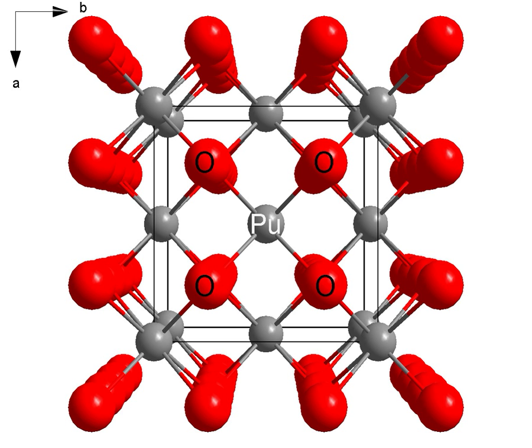Plutonium-238 dioxide is used as fuel for several deep space spacecraft such as the New Horizons Pluto probe as well as the Curiosity rover on Mars. The isotope decays by emitting alpha particles, which then generate heat — see radioisotope thermoelectric generator.